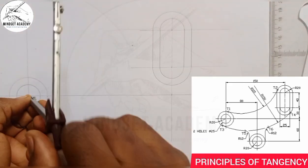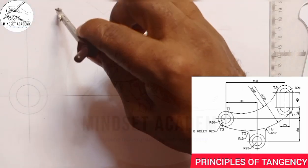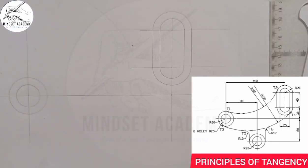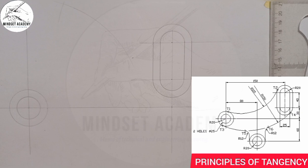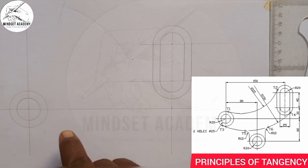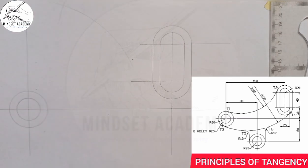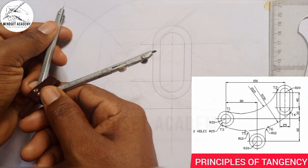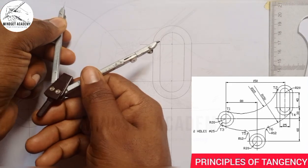I'll place the compass at this next center point and strike another arc. Where those two arcs meet — they are meeting at this point here — I'll take my compass and place it at that intersection point.